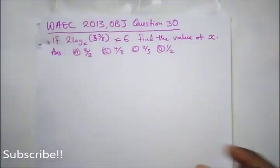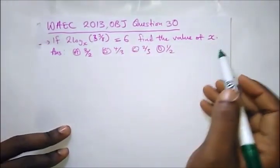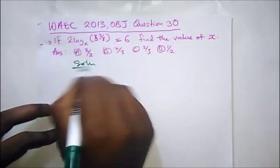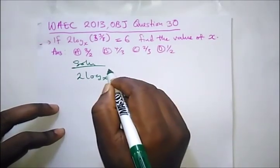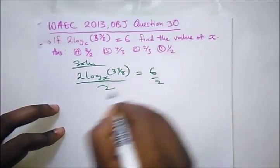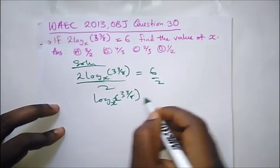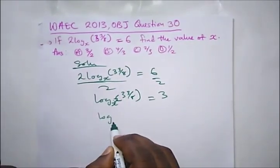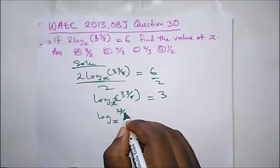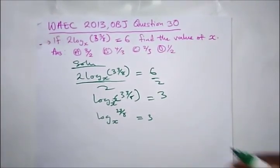Our next question is from WAEC 2013. It says: if 2·log_x(3√(3/8)) = 6, find the value of x. We divide both sides by 2, leaving us with log_x(3√(3/8)) = 3. We simplify the argument: 3√(3/8) converts to 27/8, so we have log_x(27/8) = 3.